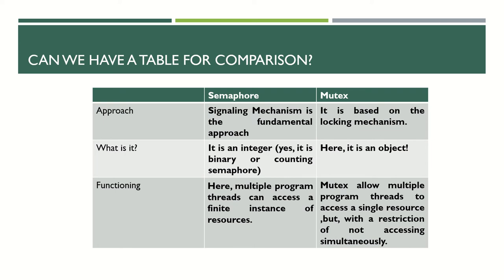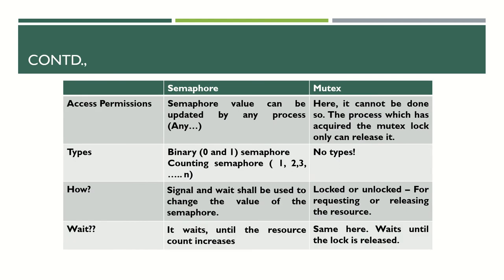In semaphore, multiple program threads can access finite instances of resources. In mutex, multiple program threads are allowed to access a single resource, but not simultaneously — one resource accessed by multiple threads, but not at the same time. For access permissions: in semaphore, the value can be updated by any process — any process can acquire or release it and update the count. In mutex, only the process that acquired the lock can release it; no other process can interfere.